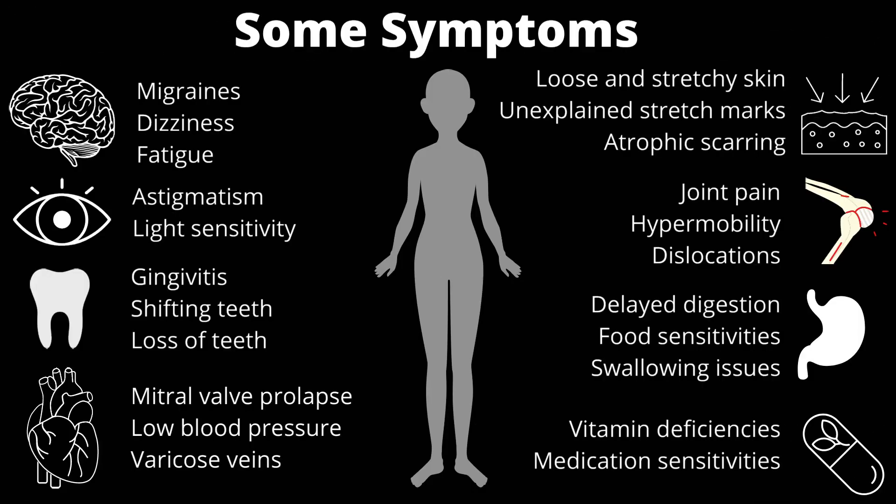There are multiple symptoms associated with all kinds of EDS. Neurological symptoms include migraines, dizziness, and fatigue. Ocular symptoms include astigmatism and light sensitivity. Dental issues include gingivitis, shifting teeth, and loss of teeth at a young age. Circulatory-related symptoms include mitral valve prolapse, low blood pressure, and varicose veins at an early age. Skin-related symptoms include loose and stretchy skin, unexplained stretch marks, and atrophic scarring.